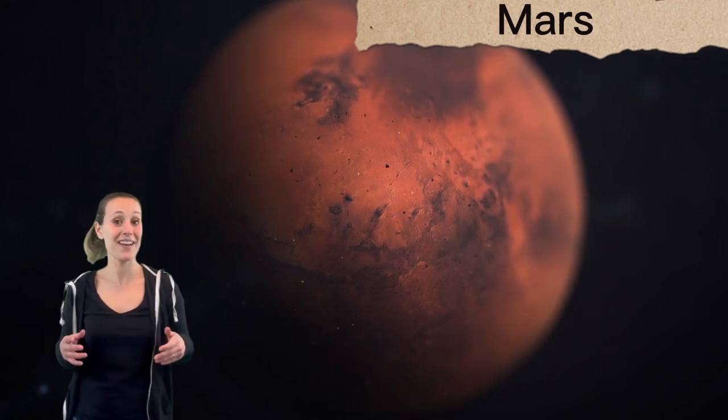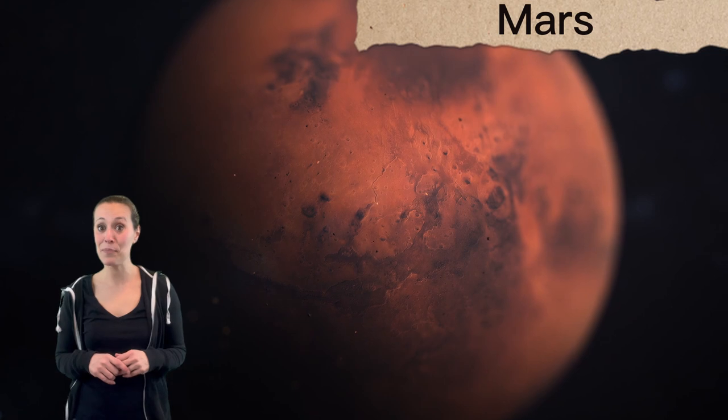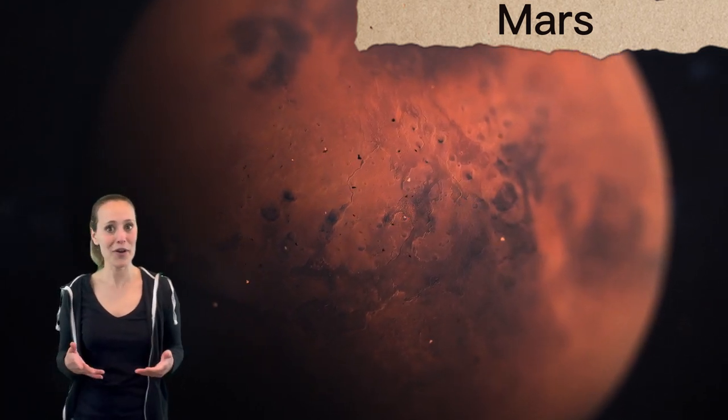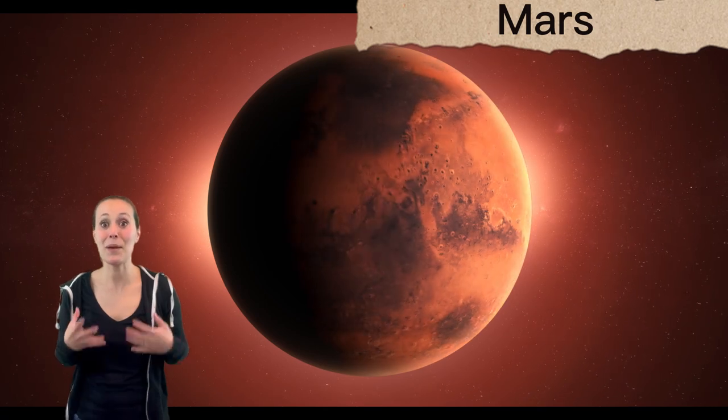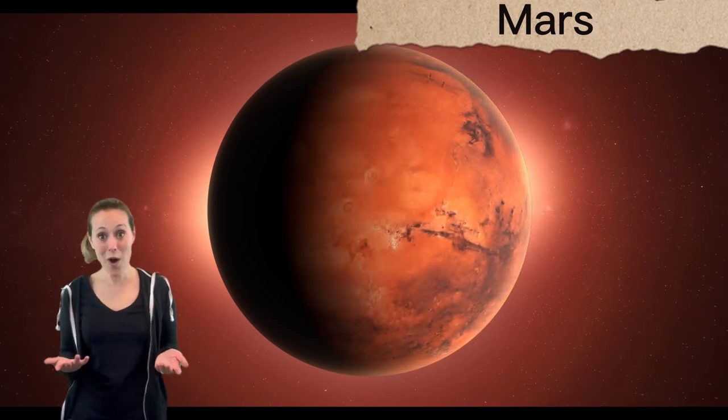Mars is more like Earth than any other planet in our solar system. In fact, scientists think that there may have been flowing rivers of water a long, long time ago. Finding water on another planet like Mars would mean that people might actually be able to live on that planet one day. What?